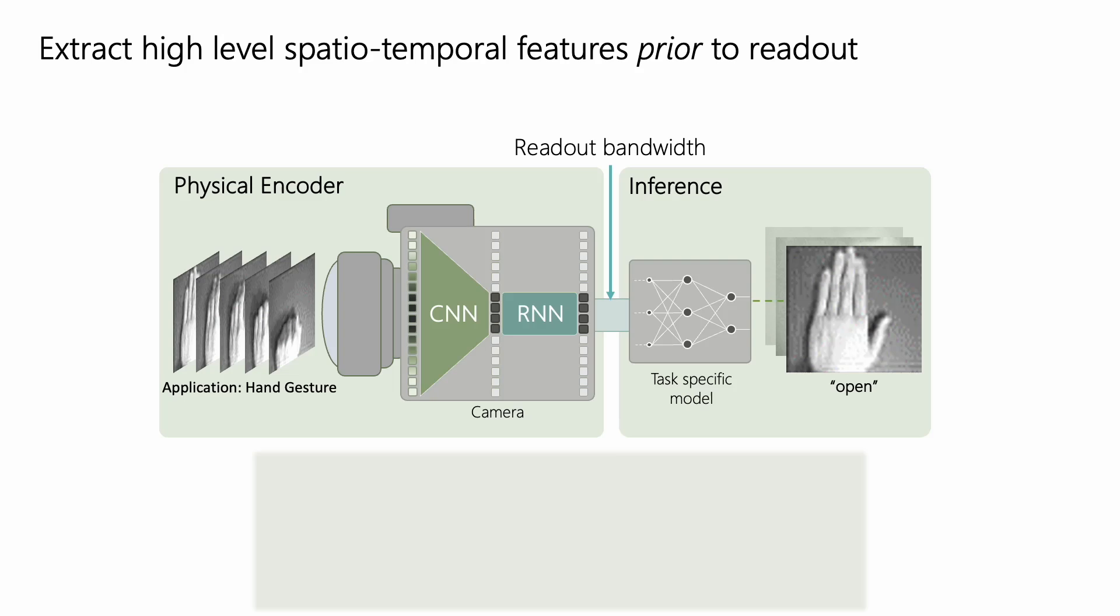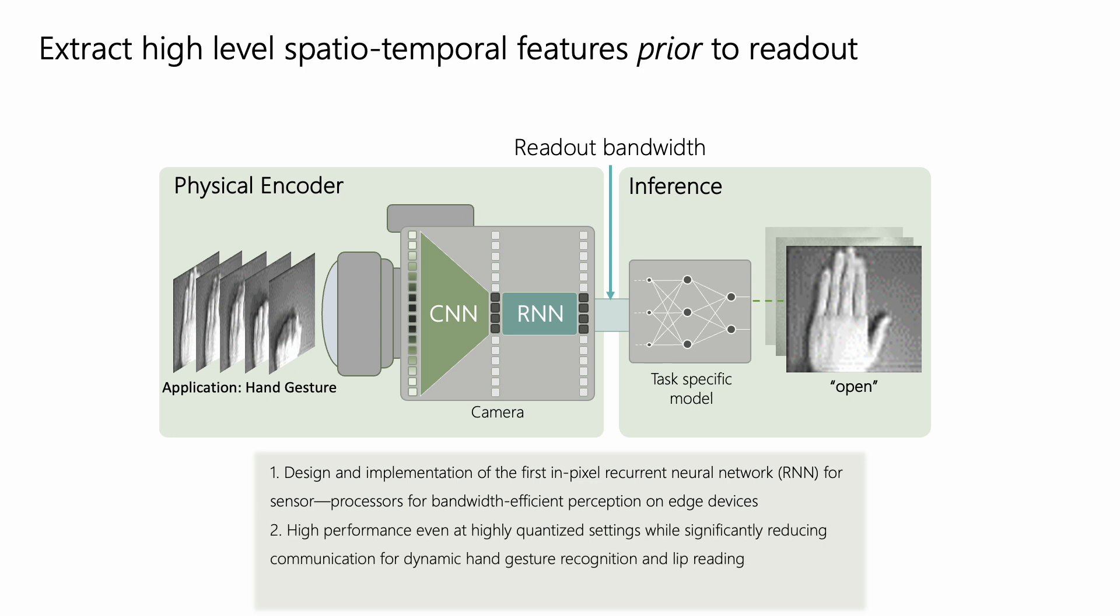In this work, we design and implement the first in-pixel recurrent neural network for sensor processors to enable bandwidth-efficient perception on edge devices. We demonstrate that our spatial-temporal encoding maintains high performance even at highly quantized settings, while significantly reducing sensor-to-processor communication with several tasks. And finally, we prototype pixel RNN on the SCAMP5 vision sensor processor.